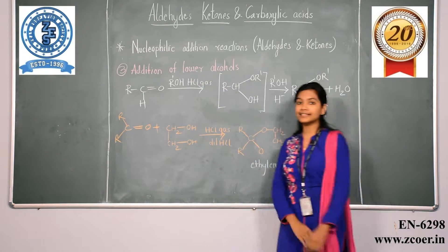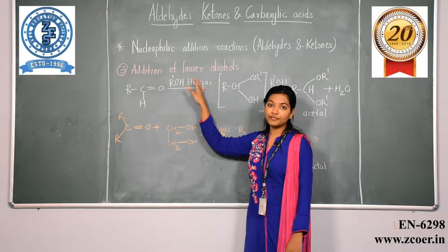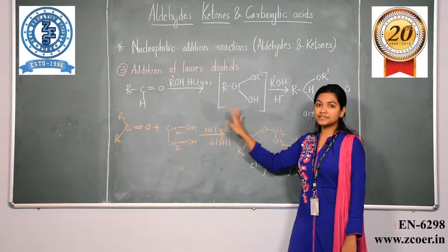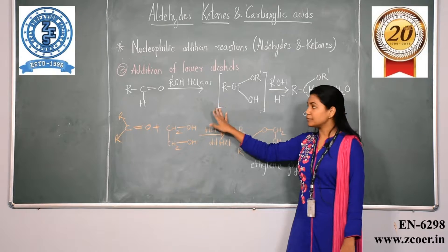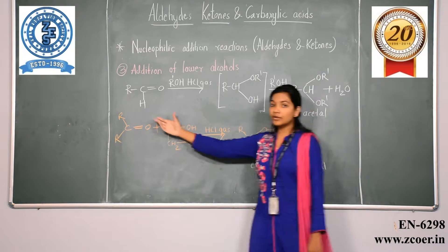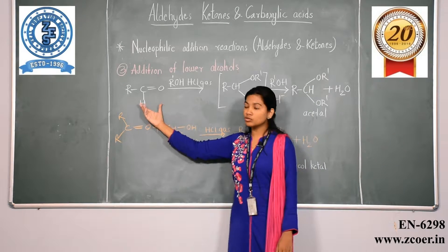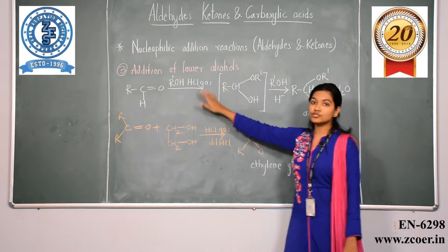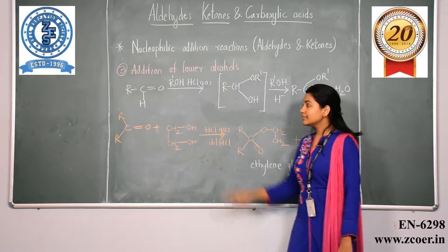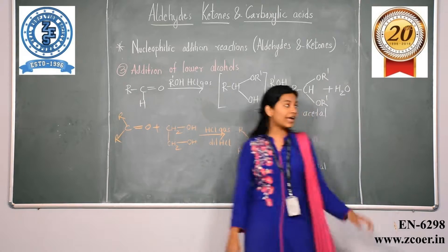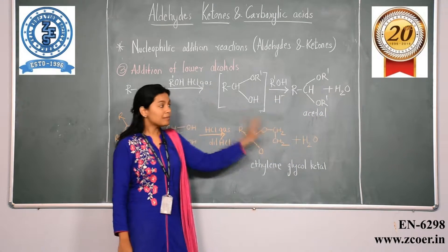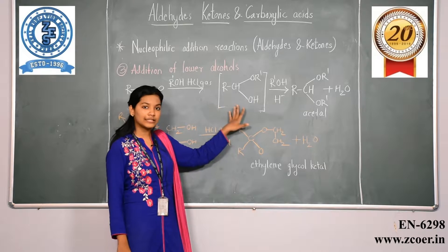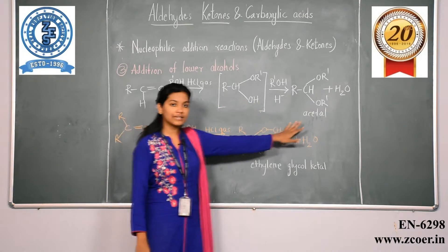Under nucleophilic addition reactions, the next type is the addition of lower alcohols. When an aldehyde or ketone group reacts with alcohols in the presence of hydrochloric acid, there is formation of an acetal as the final product. This reaction also takes place in two steps, giving an intermediate product before the final acetal.